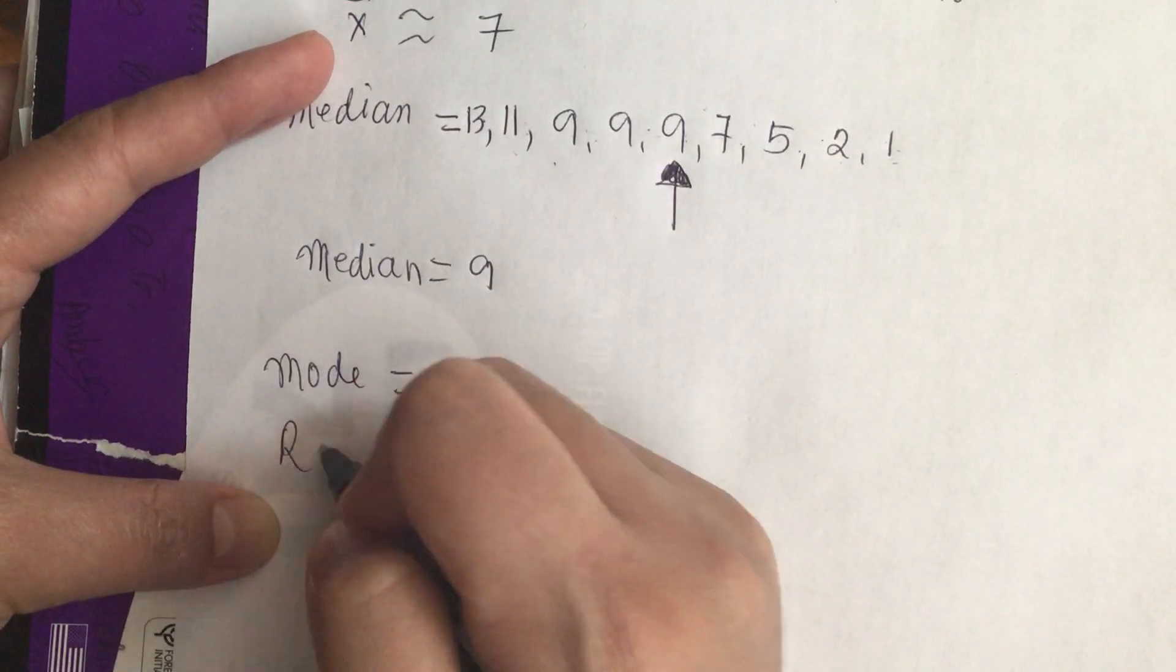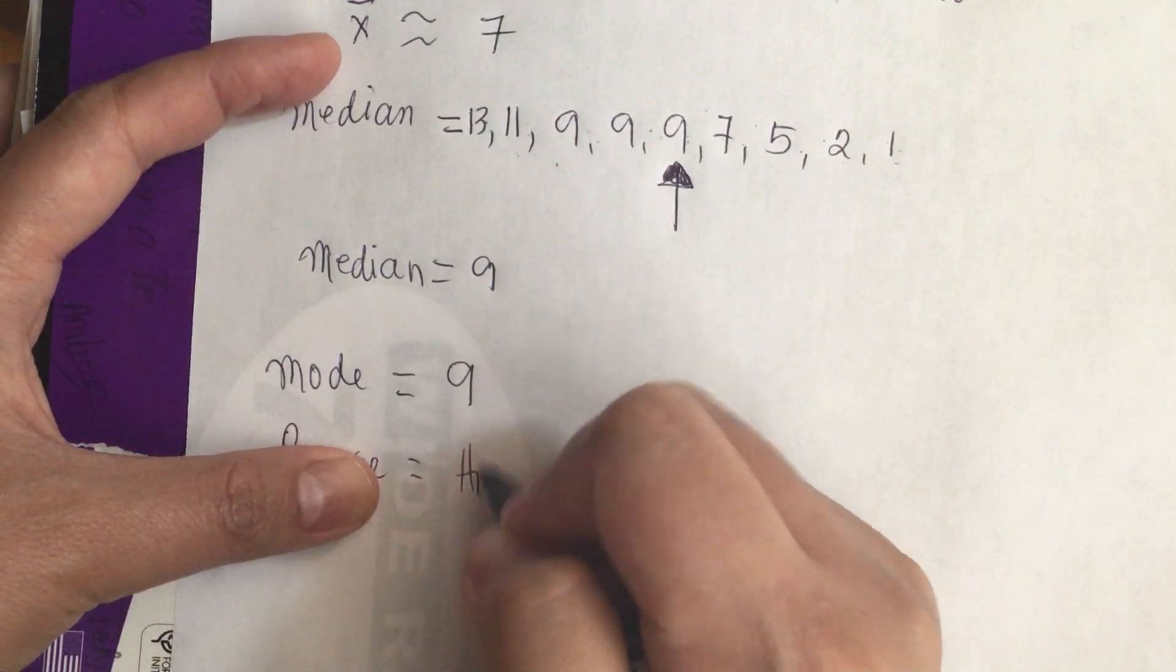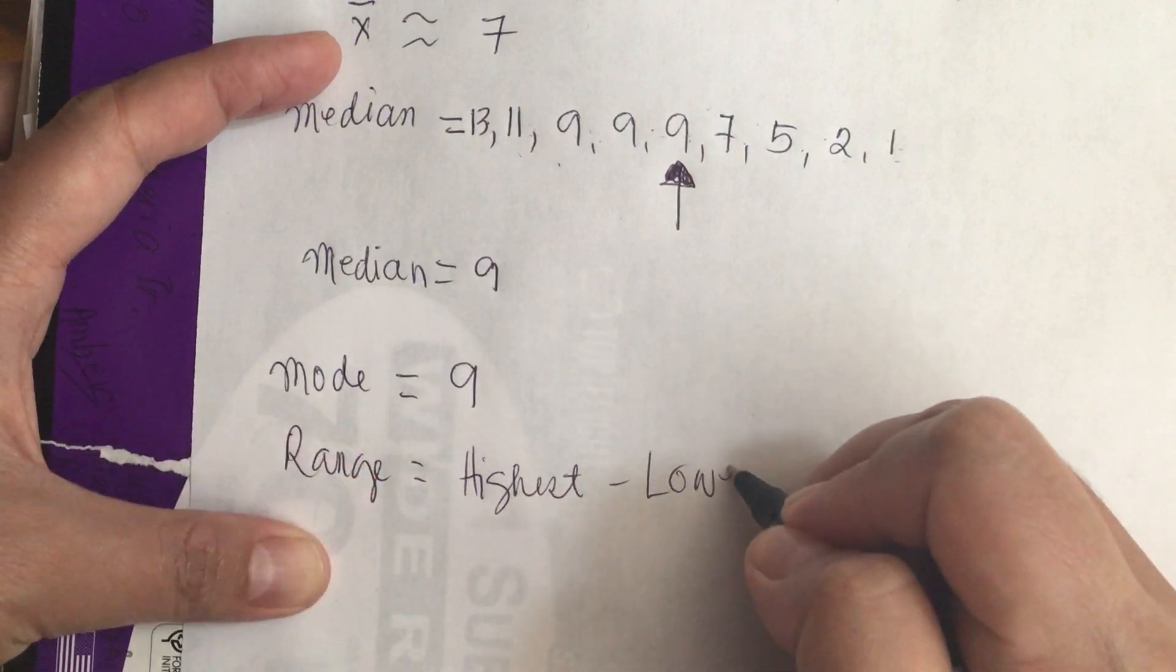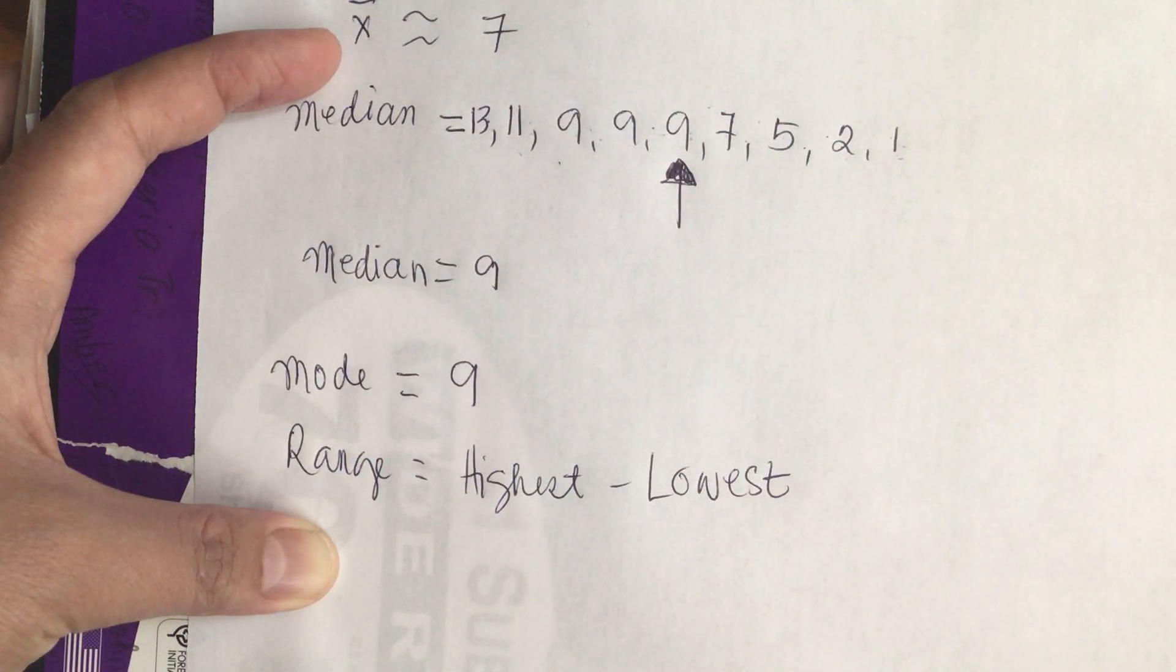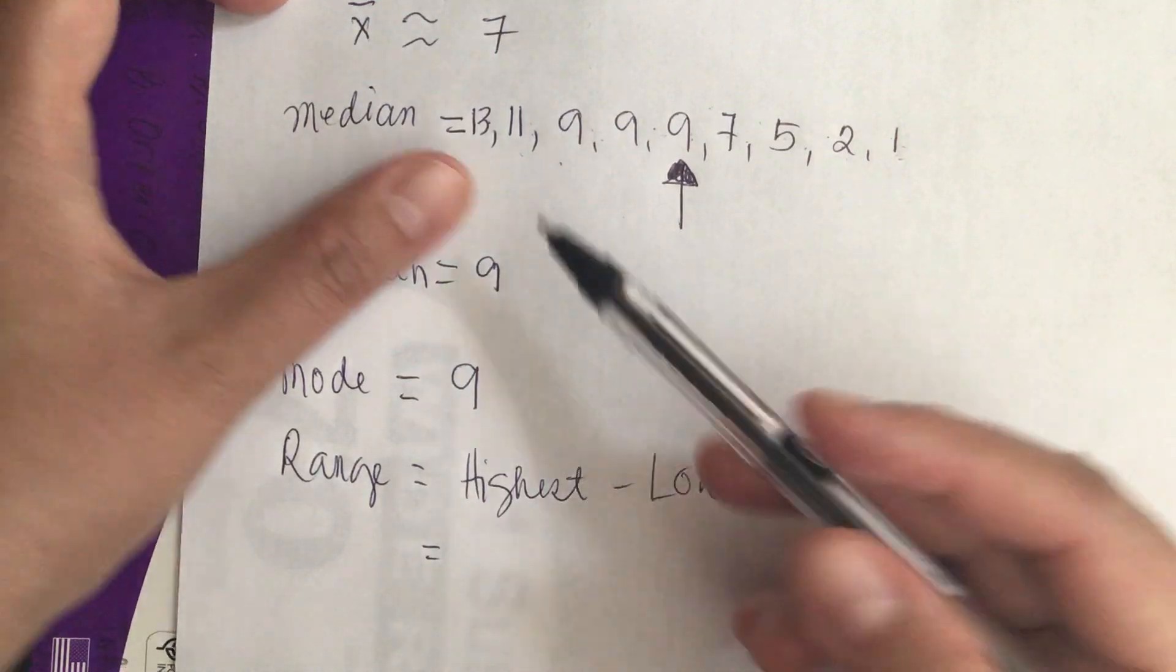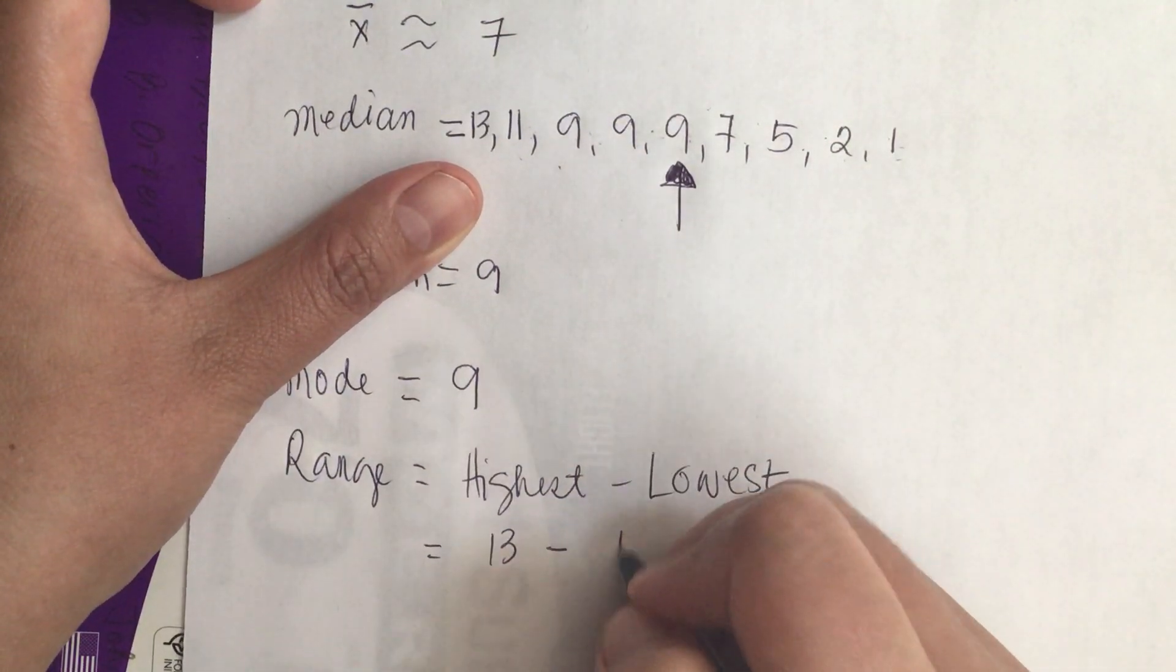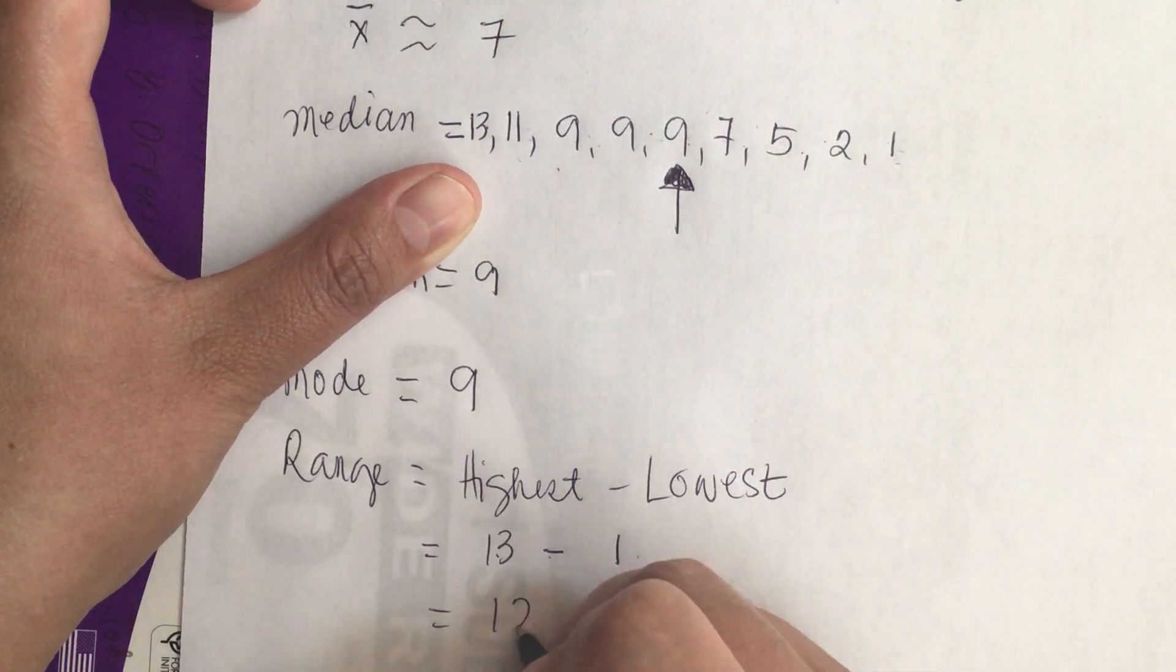And now the range is equal to highest minus the lowest. The highest is 13 minus the lowest which is 1. This is equal to 13 minus 1 is 12.